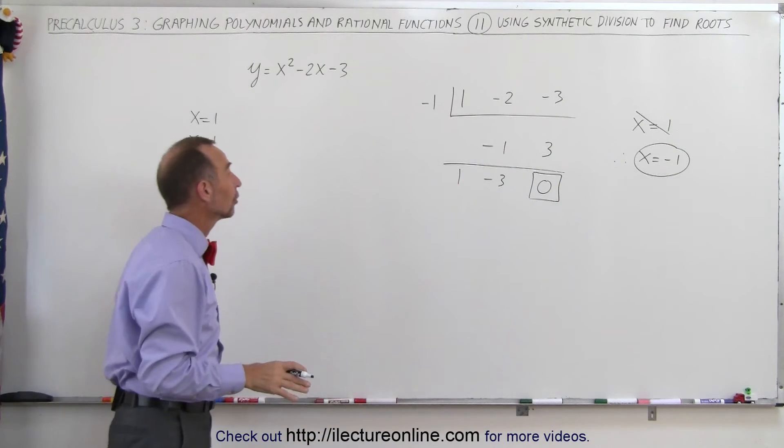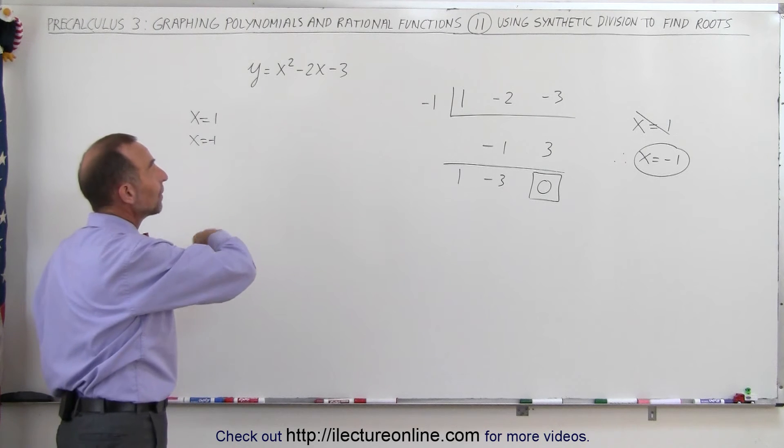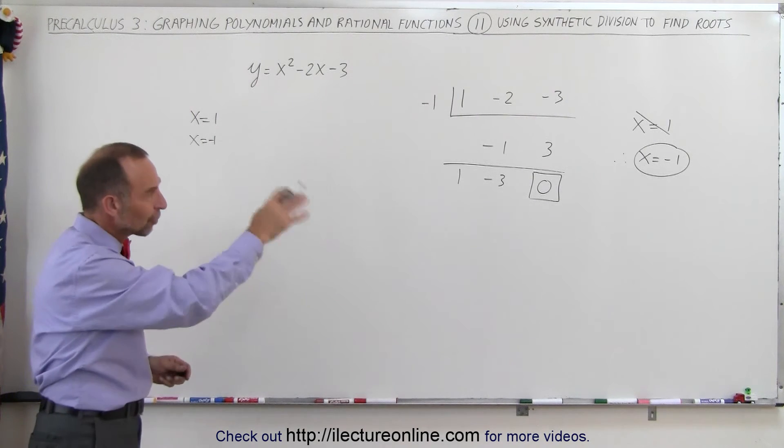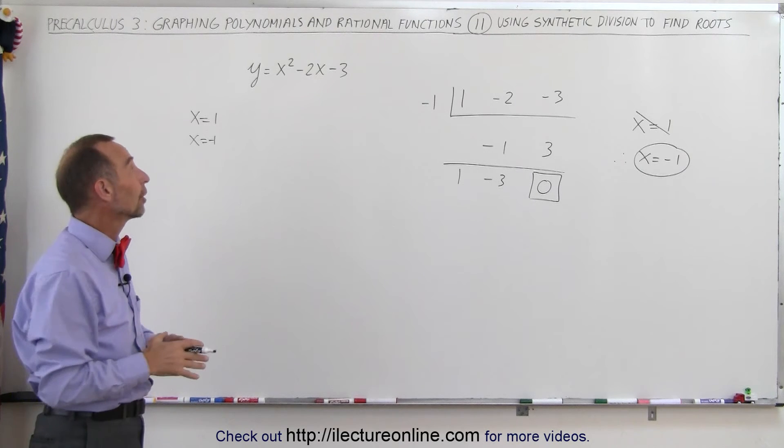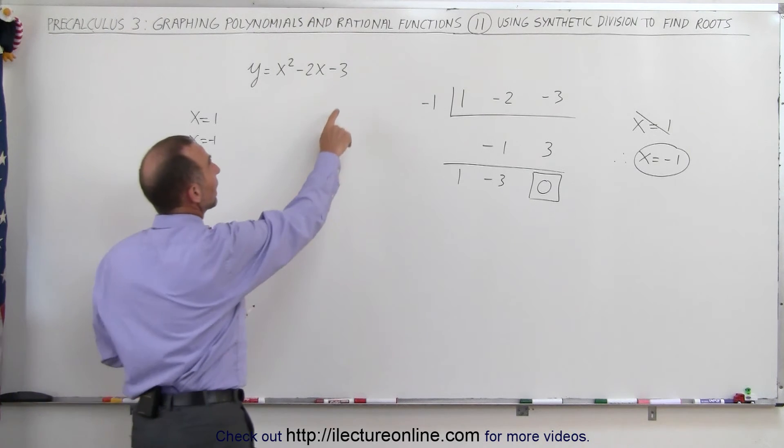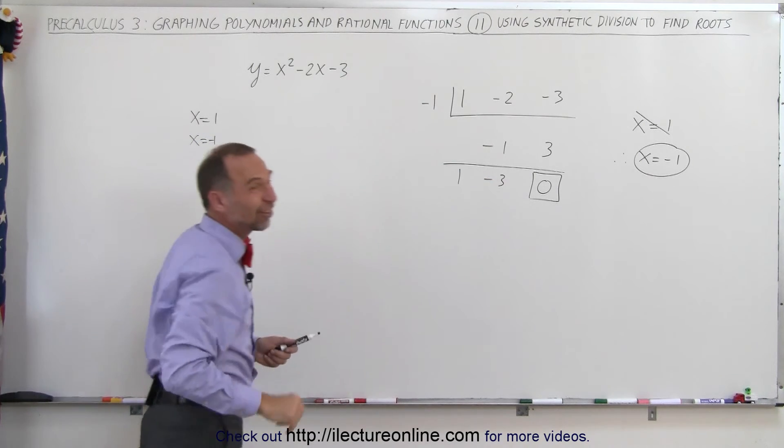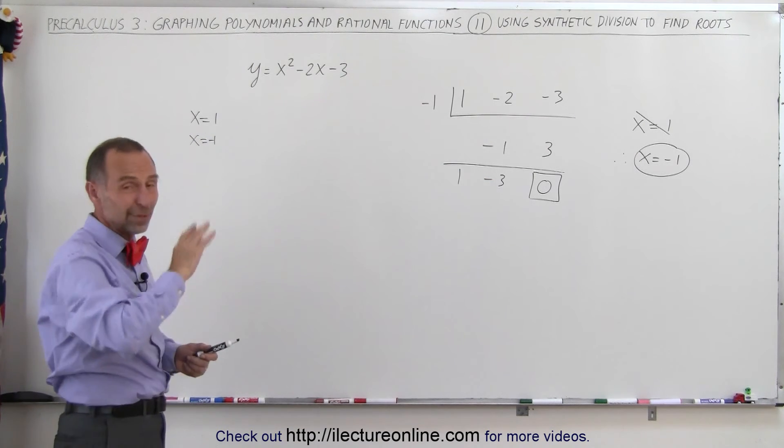Now, what you could do is say, okay, if that's one of the roots, that makes it easier to find the second root. But just for the sake of trying this method, let's see if we can come up with the other root. Now, I have a little bit of a hint. I know that I have a negative three here. And I know that one of my roots is a negative one. So, maybe three is another root.